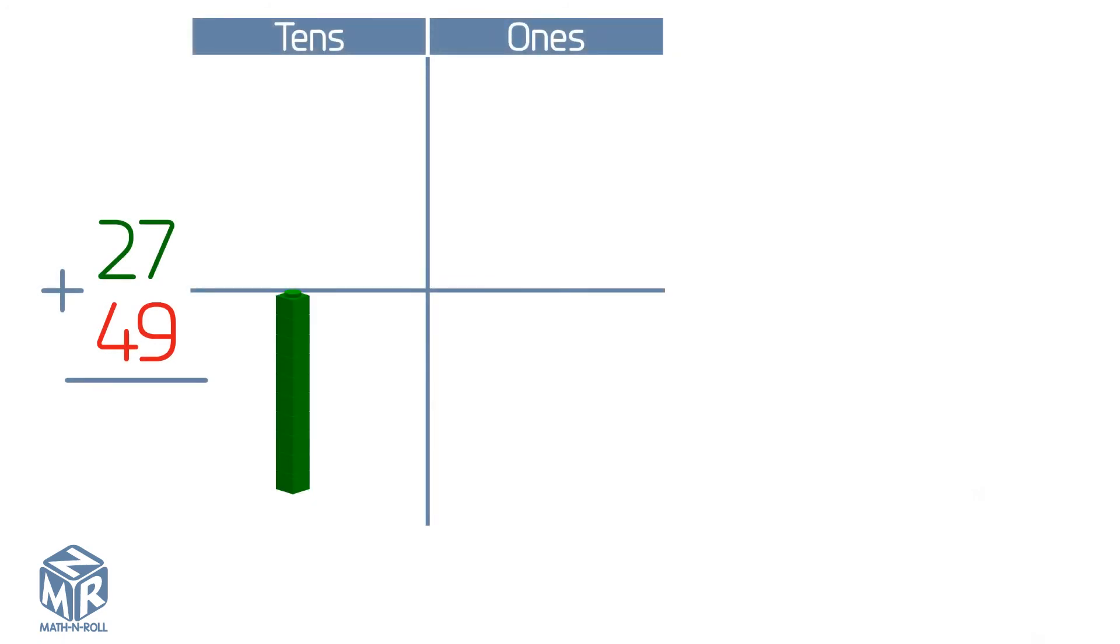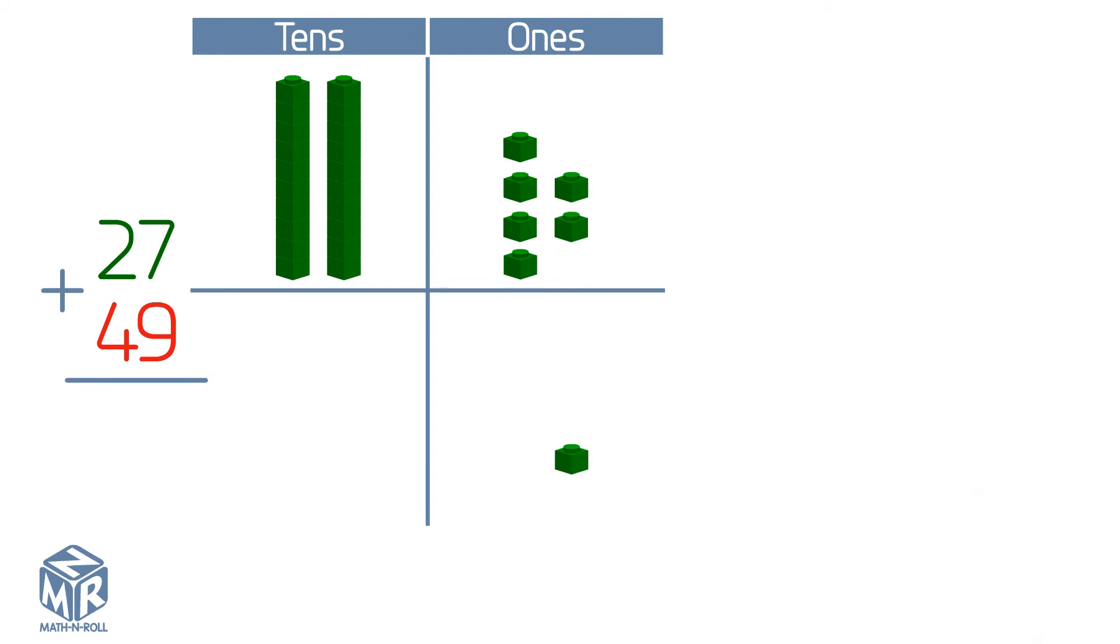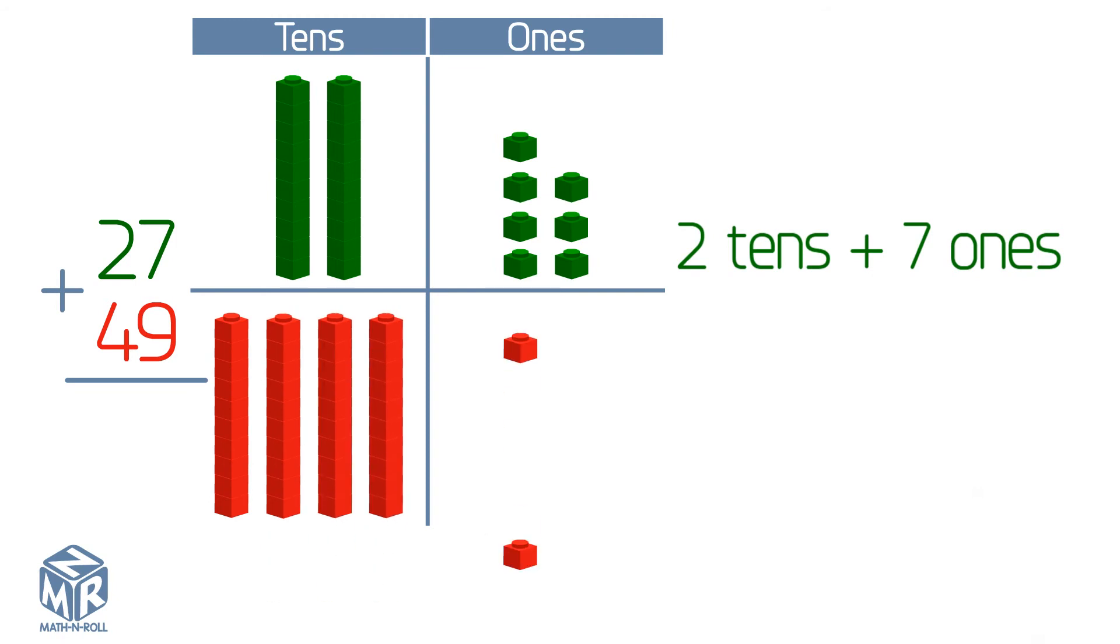Let's try another example. 27 plus 49. 27 has two tens and seven ones. 49 has four tens and nine ones.